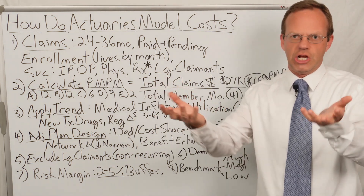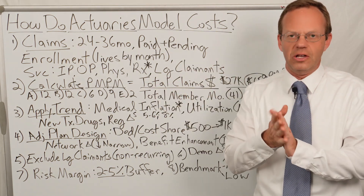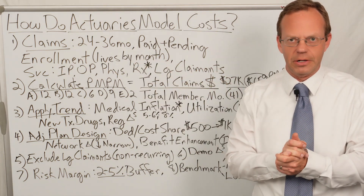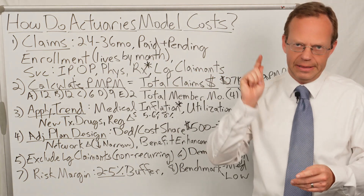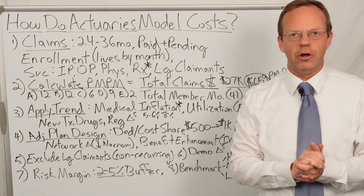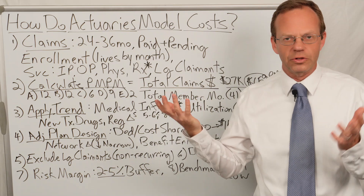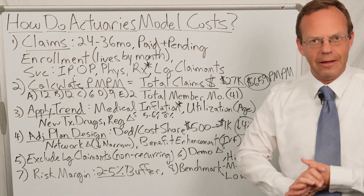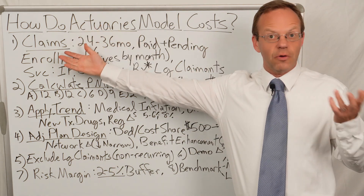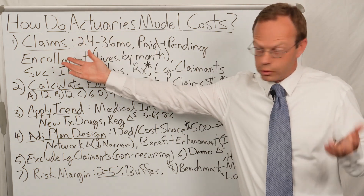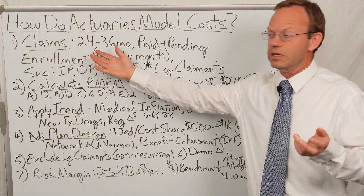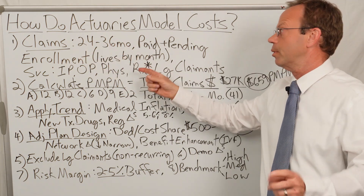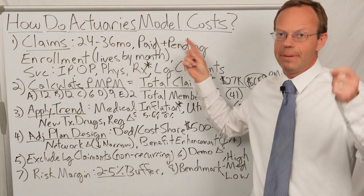Actuaries come up with a projected healthcare cost amount for an employer client — it could be a self-funded employer — and they say this is what their healthcare costs are going to be. How in the world do they get to that number? First of all, you have to start with historical claims. Usually they want 24 to 36 months of historical claims, and they want both paid and pending claims.